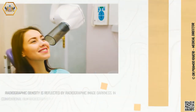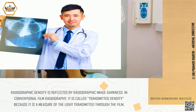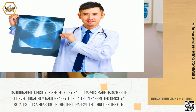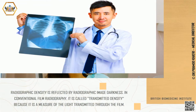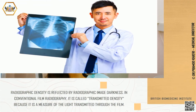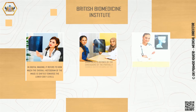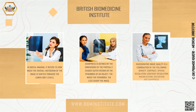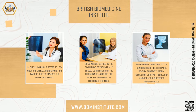Radiographic density is reflected by radiographic image darkness. In conventional film radiography, it is called transmitted density because it is a measure of the light transmitted through the film. In digital imaging, it refers to how much the overall histogram of the image is shifted towards the lower gray levels.